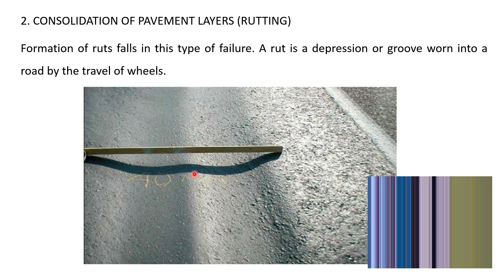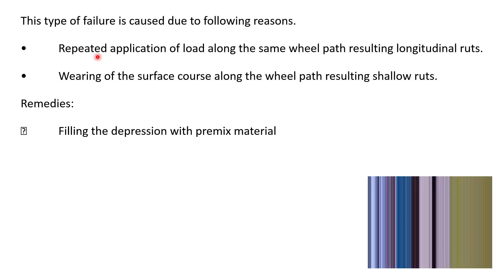This next failure is called consolidation of pavement layers, or rutting. You can see the depression in the longitudinal direction — there is a gap between the straight edge and the pavement surface. These are called ruts: depressions or grooves worn into the road by the travel of wheels. Continuous movement of wheels causes this failure. Causes are repeated application of load and wearing of the surface course along the wheel path. Remedy is filling the depression with pre-mixed bitumen material to level the surface.